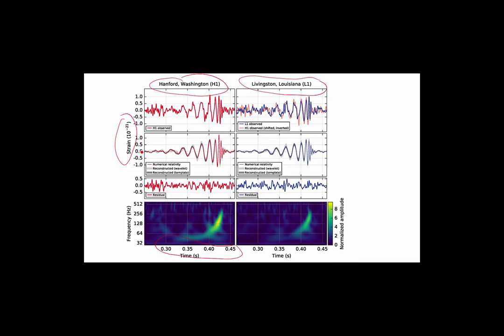And here we're comparing the data, the grey, with the theoretical model from general relativity and you can see they match up very precisely. Down the bottom we can see frequency in Hertz against time and you can see it starts off at about 40 or 50 cycles per second and goes up to over 200 in both cases before fading out.